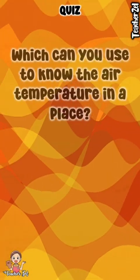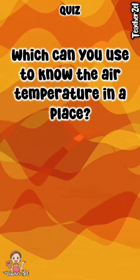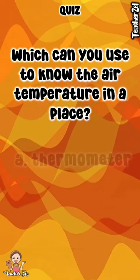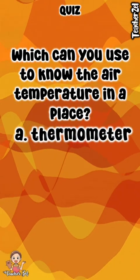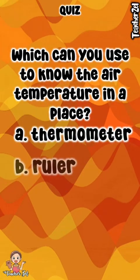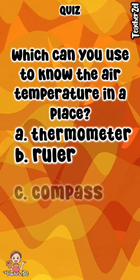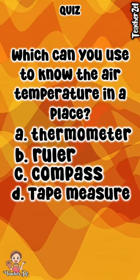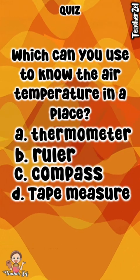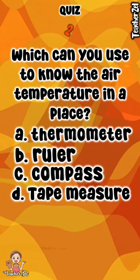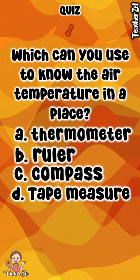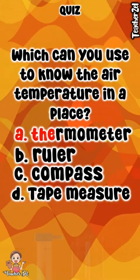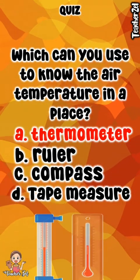Which can you use to know the air temperature in a place? A. Thermometer. B. Ruler. C. Compass. D. Tape Measure. The answer is A. Thermometer.